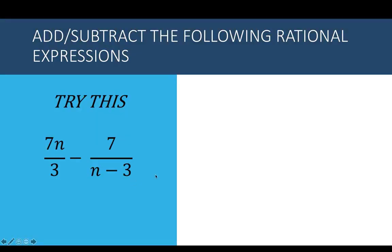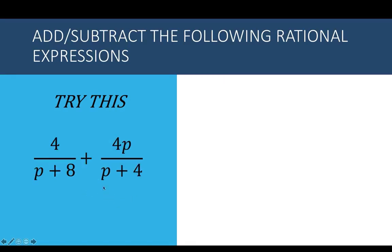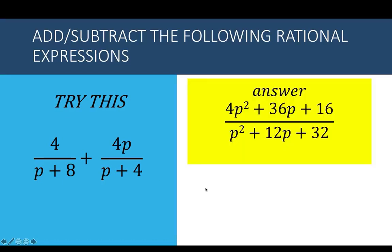You can pause the video now and try these two practice problems. First: subtract 7n over 3 minus 7 over n minus 3. Second: combine 4 over p plus 8 with 4p over p plus 4. Play the video once you have your answers to check the solutions shown on the next slides.